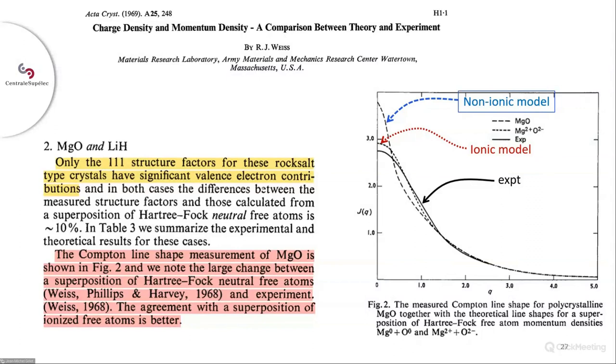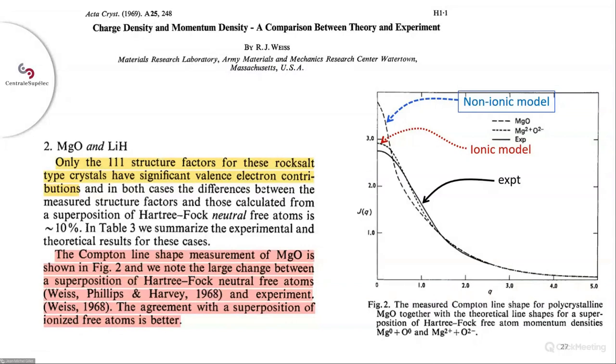So people started to explore the possibility of using higher energy photons from radioactive sources, which solve the absorption problem, satisfy the impulse approximation, and significantly improve the quality of the spectrum. They could start studying the anisotropy of momentum space. In this example, Reid and Eisenberger compared the momentum distribution in diamond, silicon and germanium in the 110 and the 111 direction, taking the 100 direction as a reference. So taking such differences has become common practice since this removes most systematic errors.